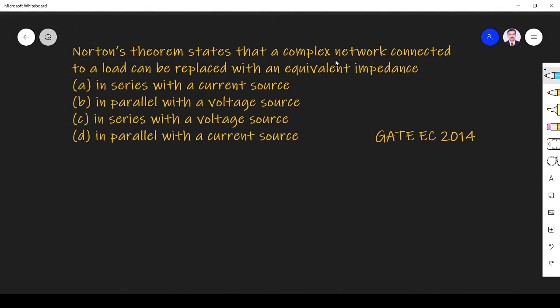Okay, so as per Norton's theorem, any complex network can be replaced with a current source with current as short circuit current